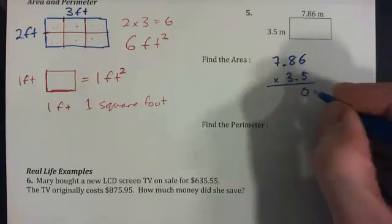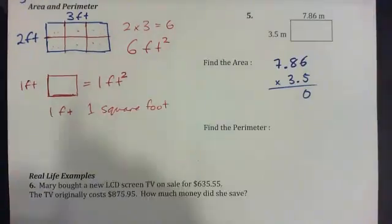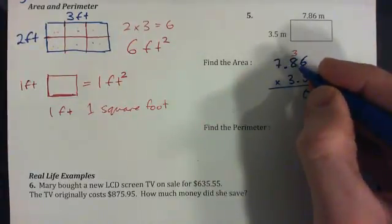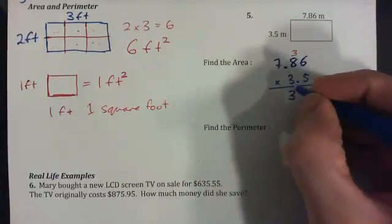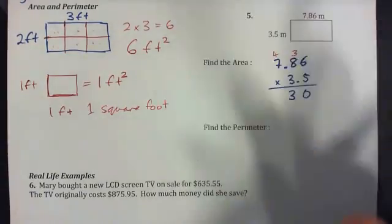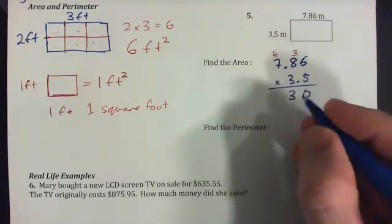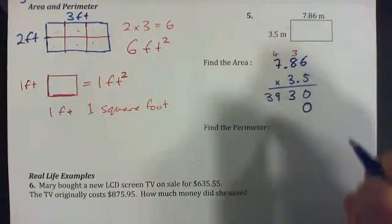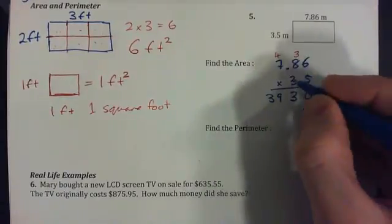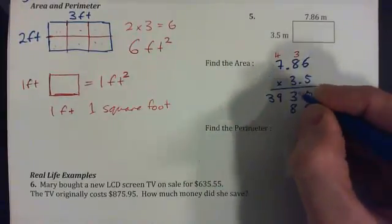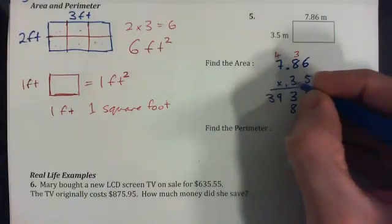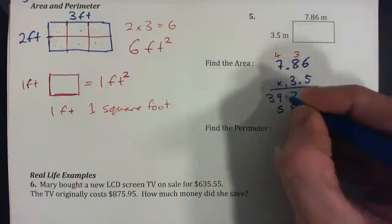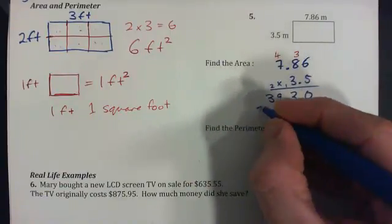So we go 5 times 6 is 30, carry the 3. 5 times 8 is 40 and 3 is 43, carry the 4. And 5 times 7 is 35 and 4 is 39. Put down a placeholder, 0, and multiply by 3. 3 times 6 is 18, put down 8, carry 1. 3 times 8 is 24 and 1 is 25, carry 2. 3 times 7 is 21 and 2 is 23.